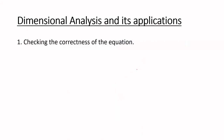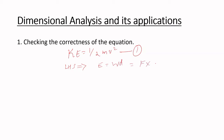Dimensional analysis has some applications. The first application is checking the correctness of an equation. We can check the familiar equation kinetic energy equals half mv squared. If an equation is correct, its LHS dimensions should equal the dimensions on the RHS. So we will first find the LHS dimension — LHS is kinetic energy, and energy means work done.